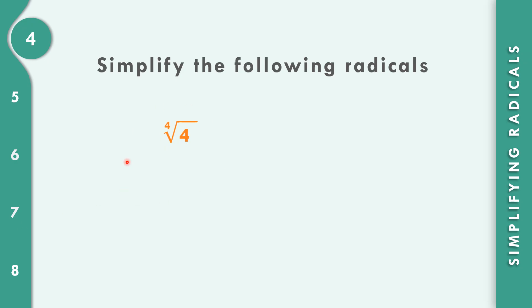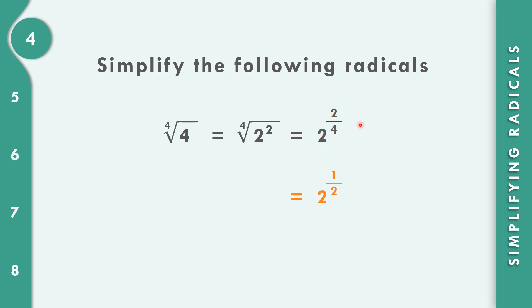For number 4, we have the 4th root of 4. The base of 4 is 2, because 2 times 2 equals 4. So we have the 4th root of 2 squared. Writing the exponent 2 over the index 4 and reducing to lowest terms: 2 divided by 2 is 1, and 4 divided by 2 is 2, giving us 2 to the 1 half. Converting back to radical form, the final answer is the square root of 2.